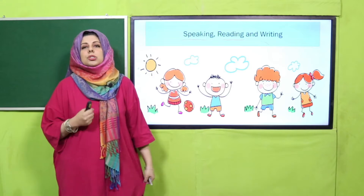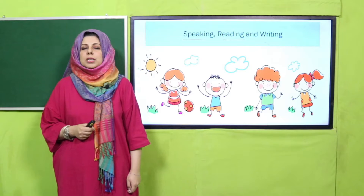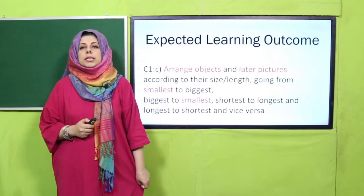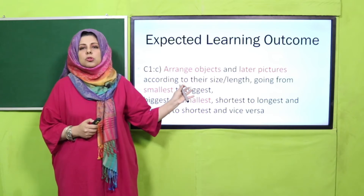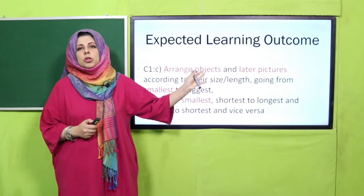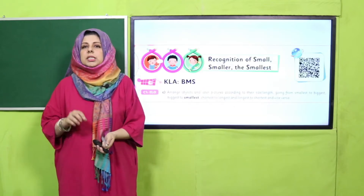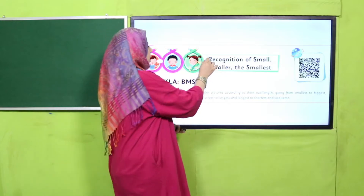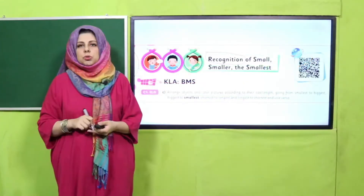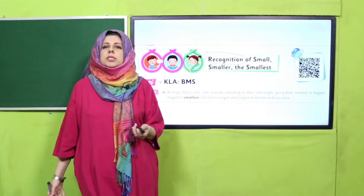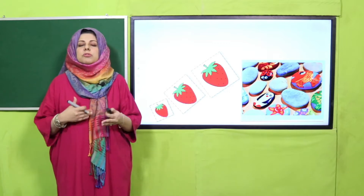Yani aaj aap jo dekhenge, jo sawaal teacher poochenge, unke jawaab denge, aur usi context mein jisme hum aaj ka concept kar rahe hain, hum objects ko arrange karenge — smallest to small, smaller and smallest ki category mein. Dear teachers, aaj ka lesson recognition ke level ka hai, yani aaj bachche pahchan chuke hain, so let's reinforce further and build on it.